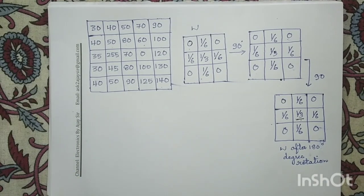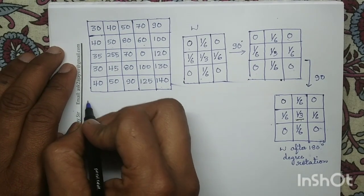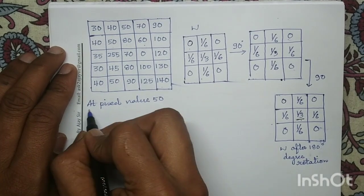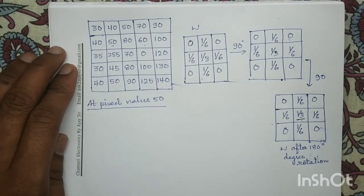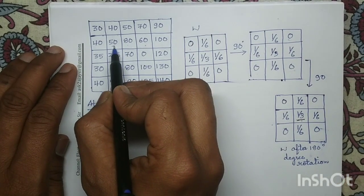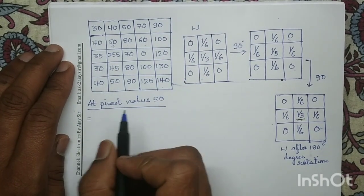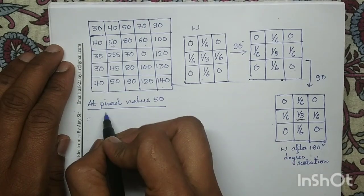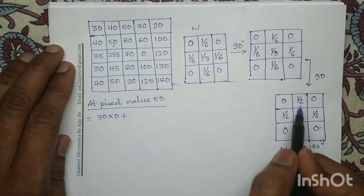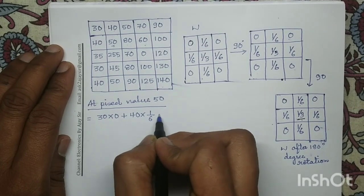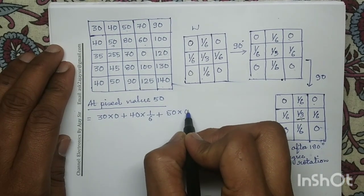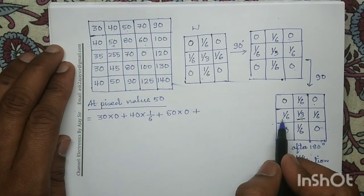First we will perform for pixel value 50. So if we place the center of this mask, that is 1/3, at 50 and perform the bitwise multiplication, it means this 30 will be multiplied with 0, plus this pixel value 40 will be multiplied with coefficient 1/6. Next, pixel value 50 will be multiplied with coefficient 0, plus pixel value 40 will be multiplied with coefficient 1/6.